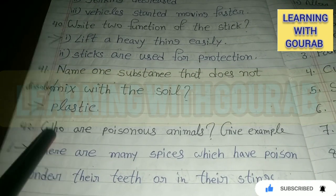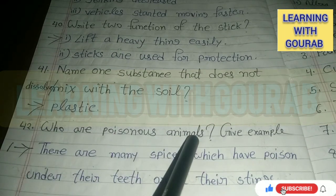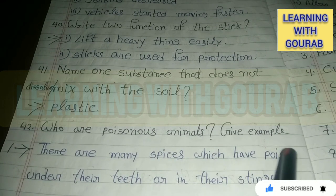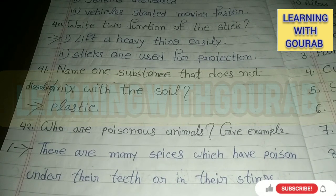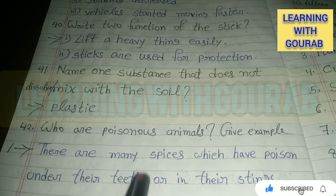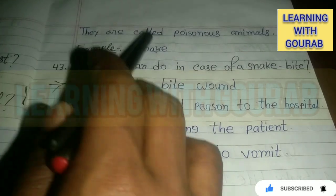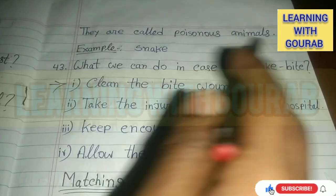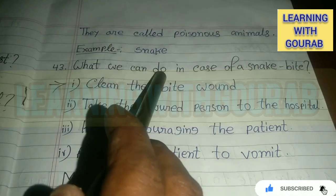Who are called poisonous animals? Give an example. Answer: There are many species which have poison under their teeth or in their stings. They are called poisonous animals. Example: Snake.